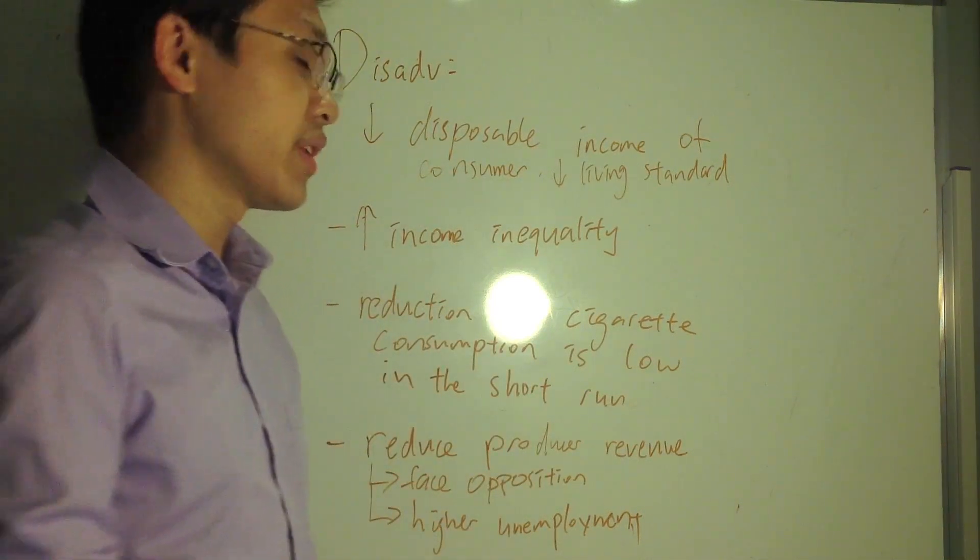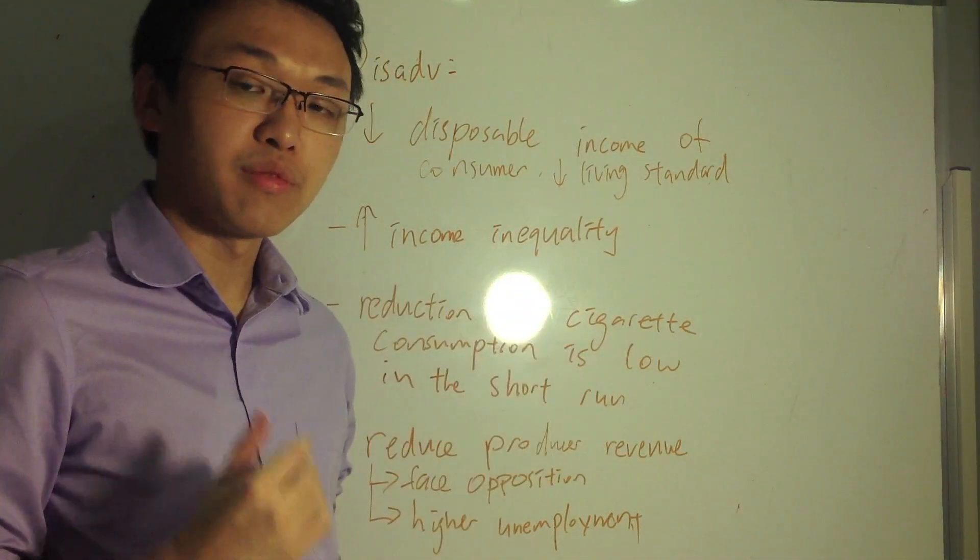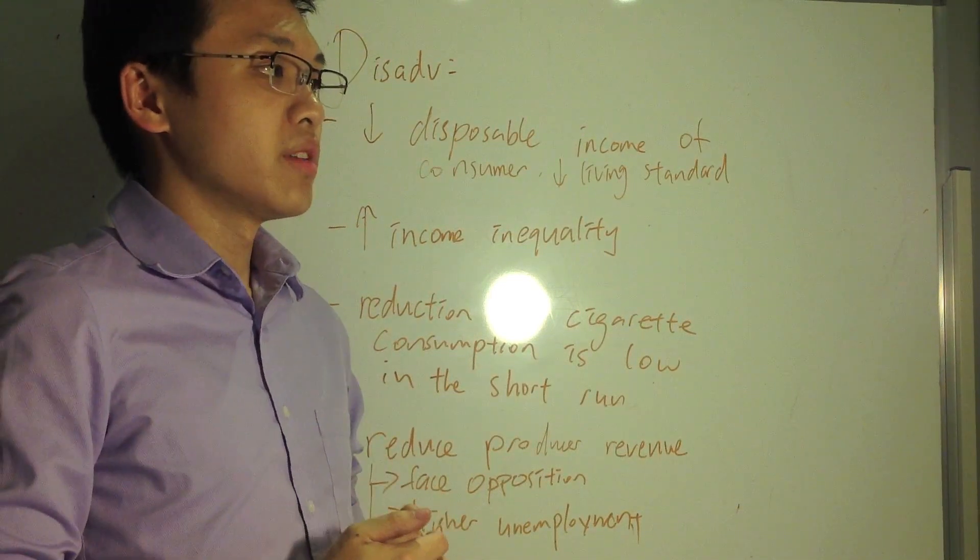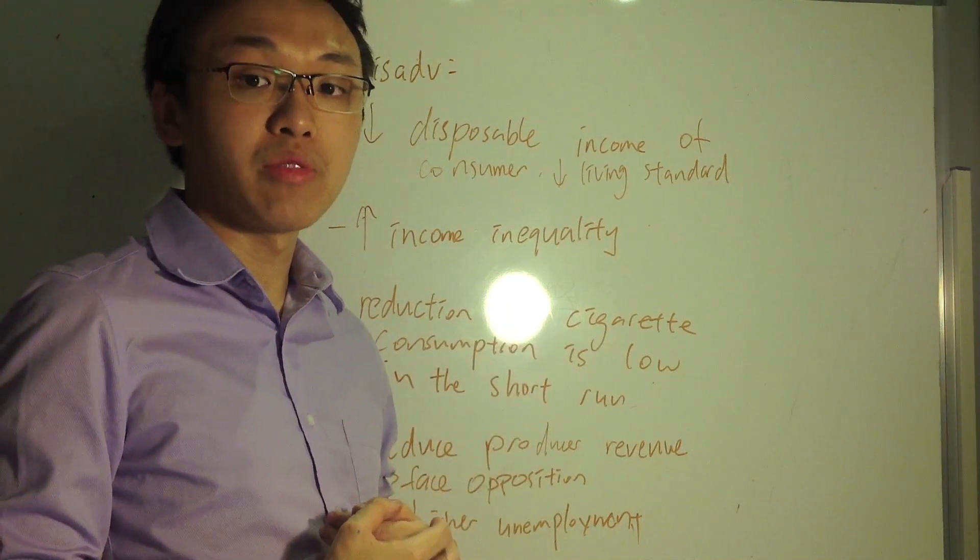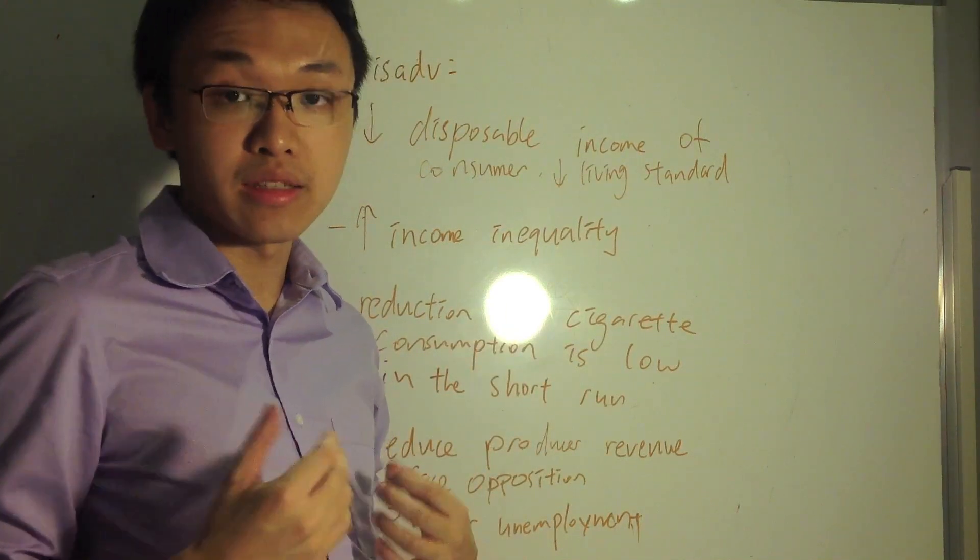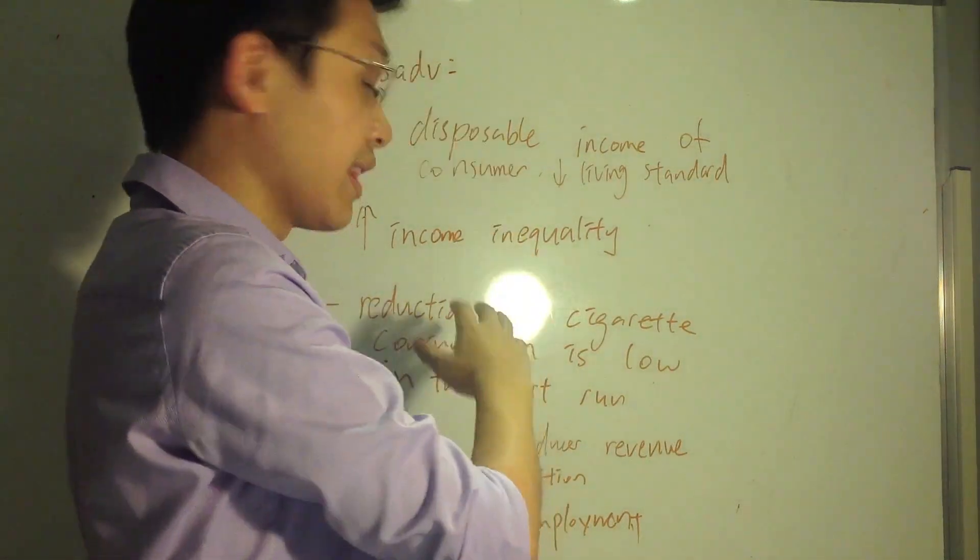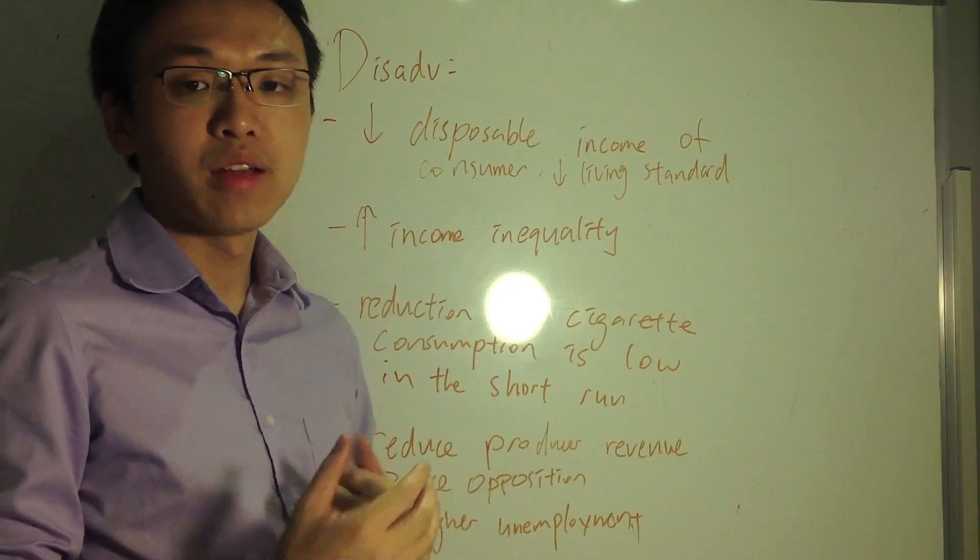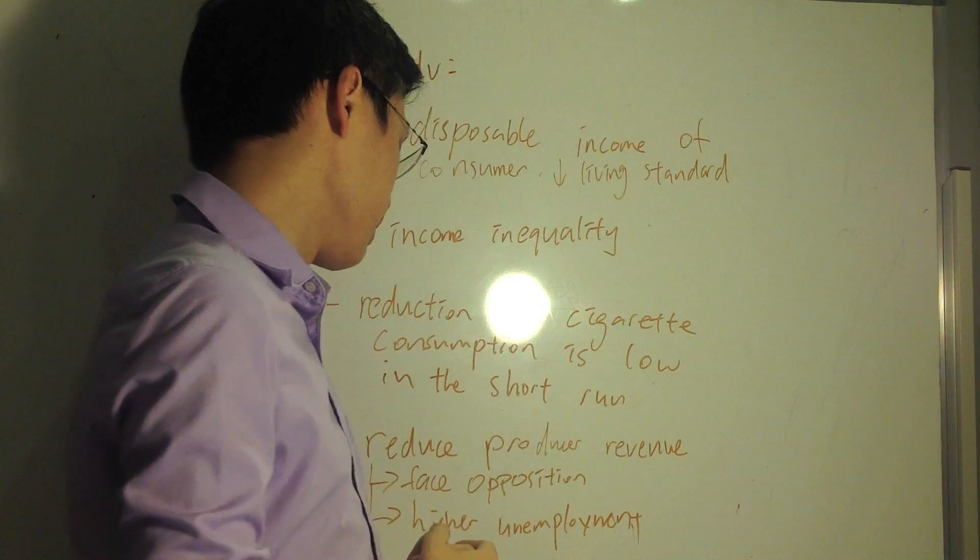The next point you can say is that the reduction in consumption of cigarettes is actually relatively low due to the low PED. In other words, the indirect tax's original purpose is to reduce smoking, but that outcome may not be very effectively achieved due to the low elasticity of cigarettes. And this is at least in the short run. Because in the long run, PED tends to be higher because consumers have time to switch their consumption habits.